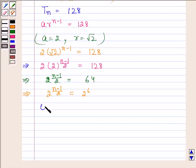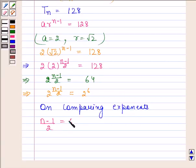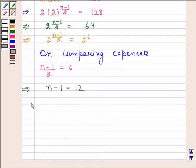On comparing exponents, we find that n minus 1 by 2 is equal to 6. And this implies n minus 1 is equal to 12. And this implies n is equal to 13.